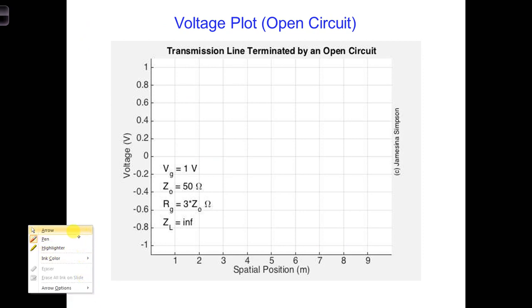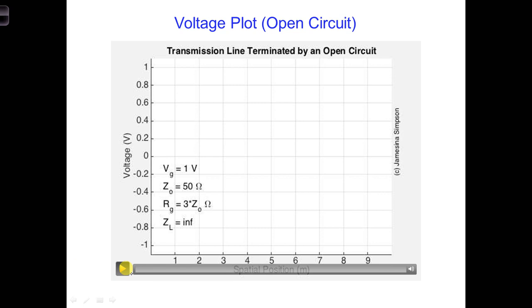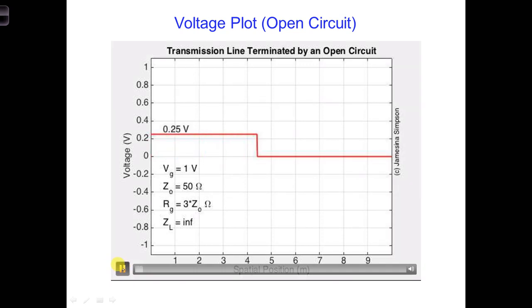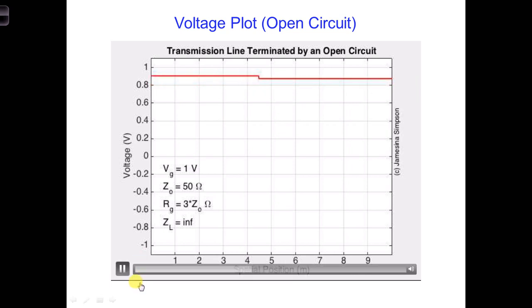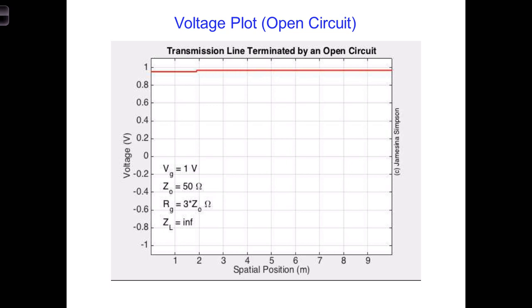Here is a movie created from the computer code solving the telegrapher's equations for the problem you just solved. This movie shows the total voltage along the entire transmission line over time. So we get V1+, here's V1- and V1+, and then V2+ is added on top of that, and it keeps going. You can see it's trending towards a particular value.